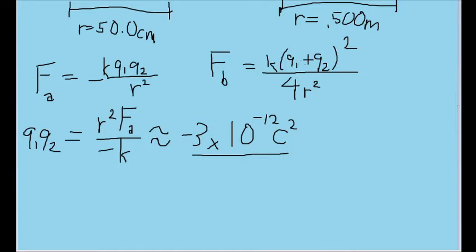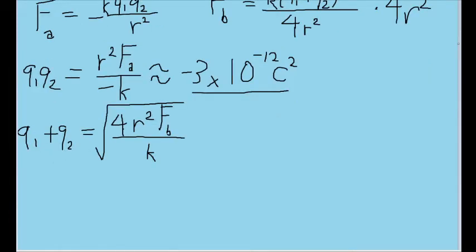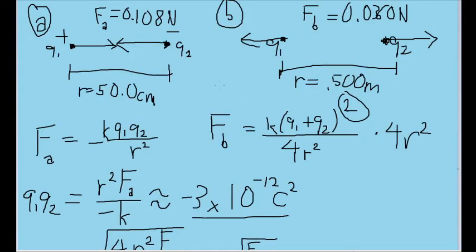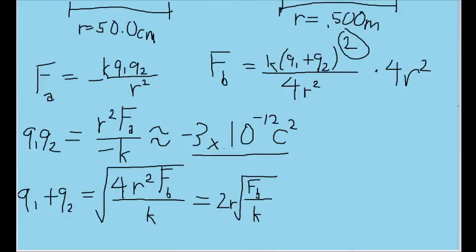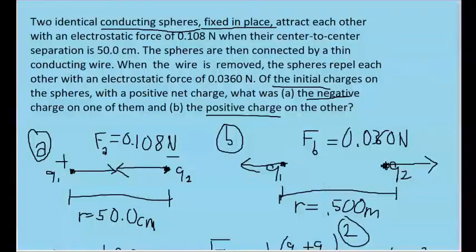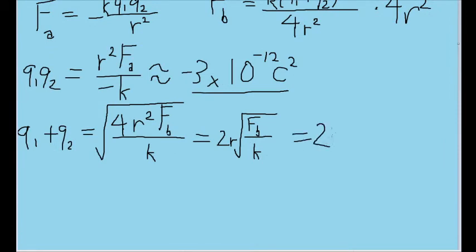Now let's solve for Q1 plus Q2. We multiply both sides by four R squared, then we divide both sides by K. Since Q1 plus Q2 is still surrounded by a square, we'll just square root the whole thing. So Q1 plus Q2 is equal to the square root of four R squared times F sub B divided by K. We can simplify this by realizing that four and R squared are both equally square rooted, so that gets simplified to two R times the square root of FB over K. Plugging in the values, we have 0.5 meters for R, 0.0360 newtons for FB, and the same constant for K. Keep in mind that we're using SI units, so use 0.5 meters, don't use 50 centimeters. This gets us about two times 10 to the negative sixth Coulombs. Once again, I'm rounding a bit here, but make sure you keep the exact value in your calculator.